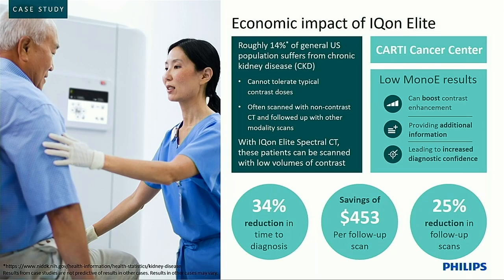What can ICON do for you economically? About 14% of the general population suffers from chronic kidney disease and cannot tolerate contrast, forcing very low doses or no contrast and compromising care. ICON helps by enabling lower doses of contrast, using low mono-E images to boost that contrast and improve image quality. One study showed a 34% reduction in time to diagnosis, a 25% reduction in follow-up scans due to confident diagnosis with lower contrast, and approximately $453 per scan in financial savings — scalable to your institution's patient volume.